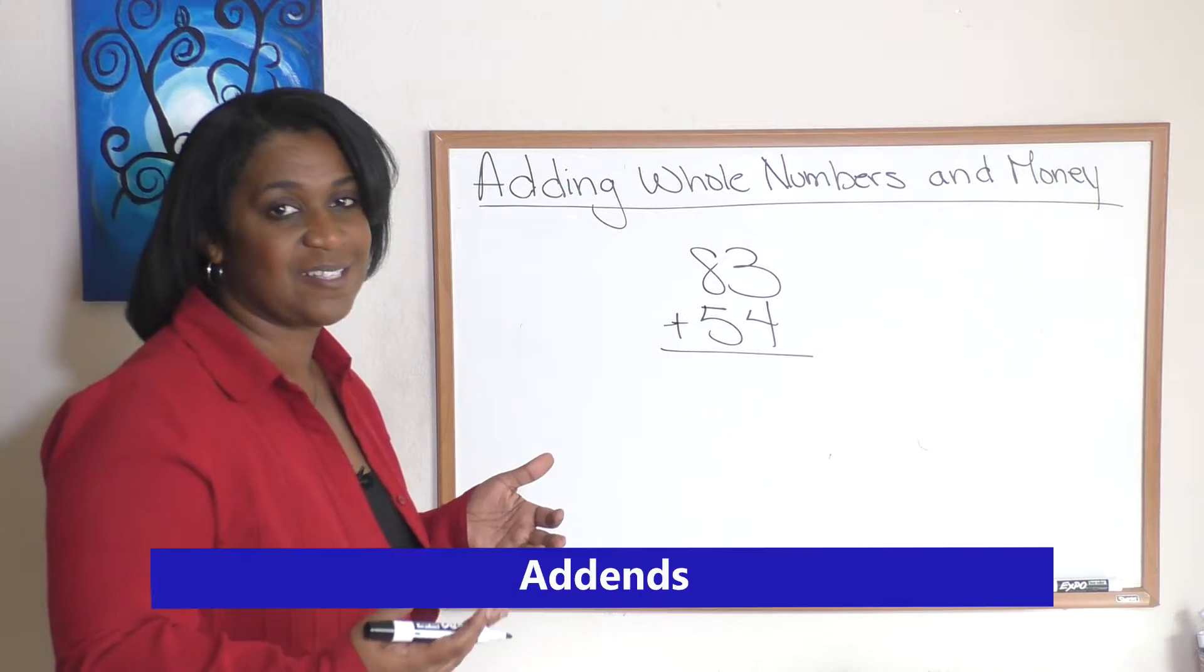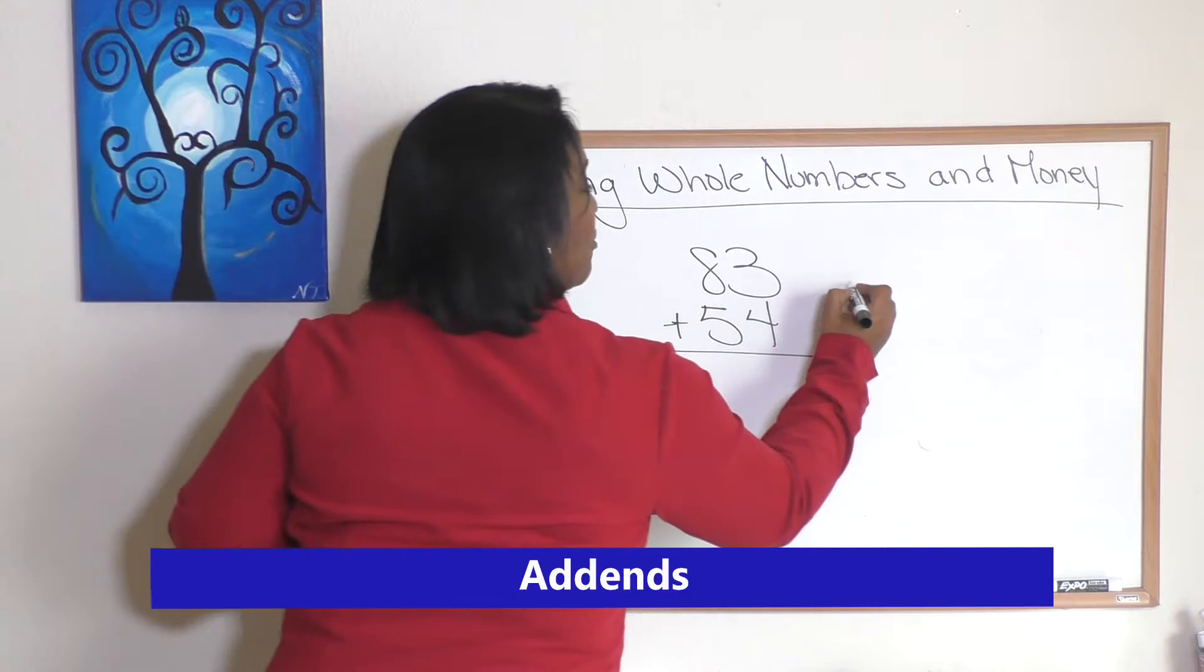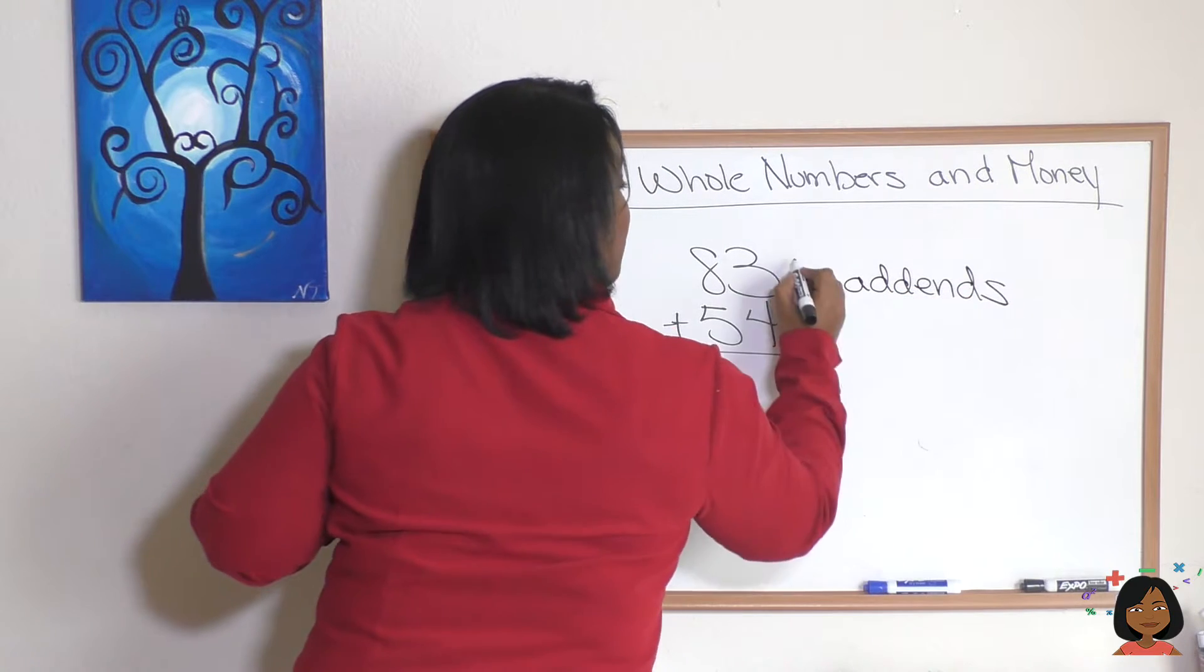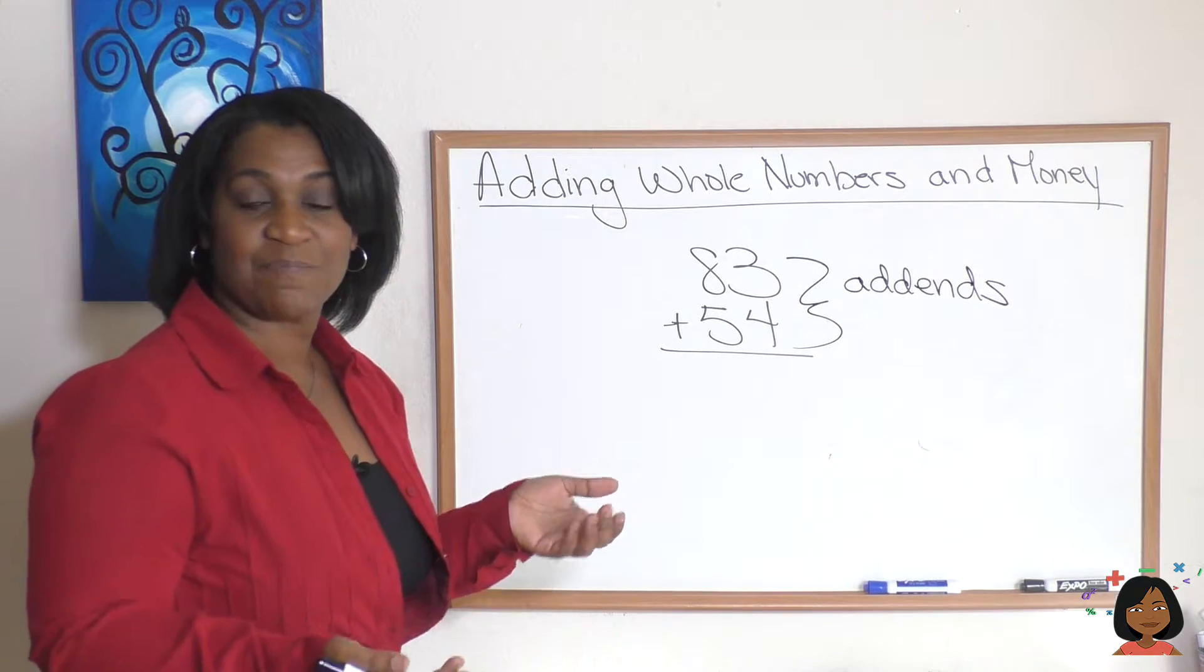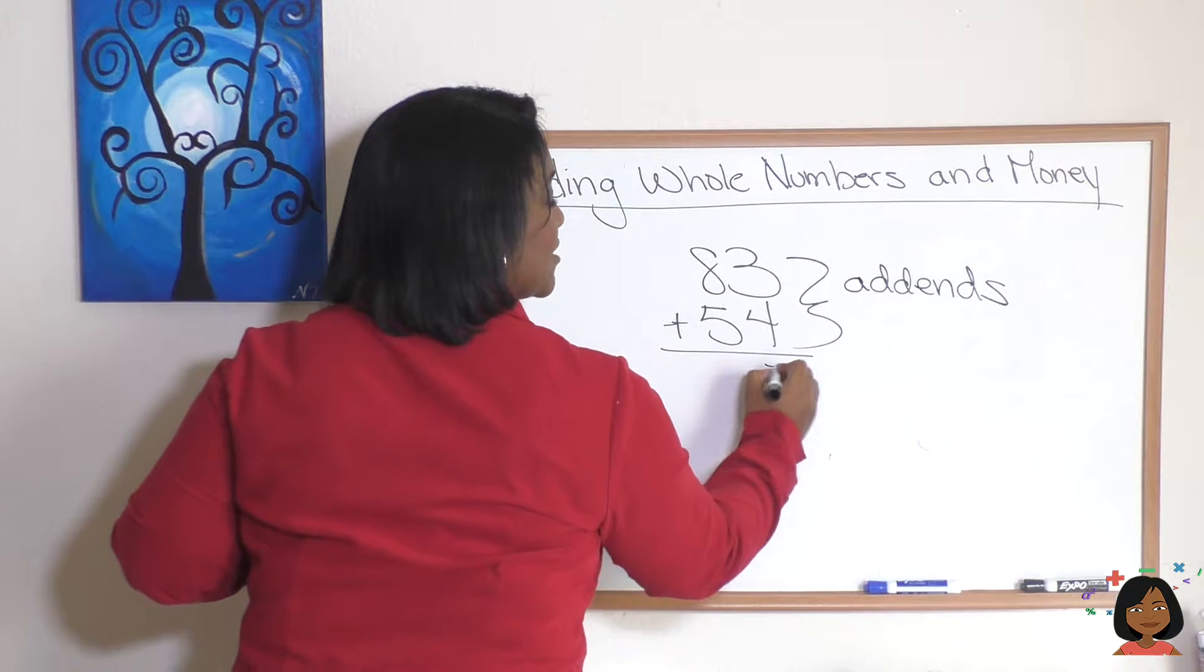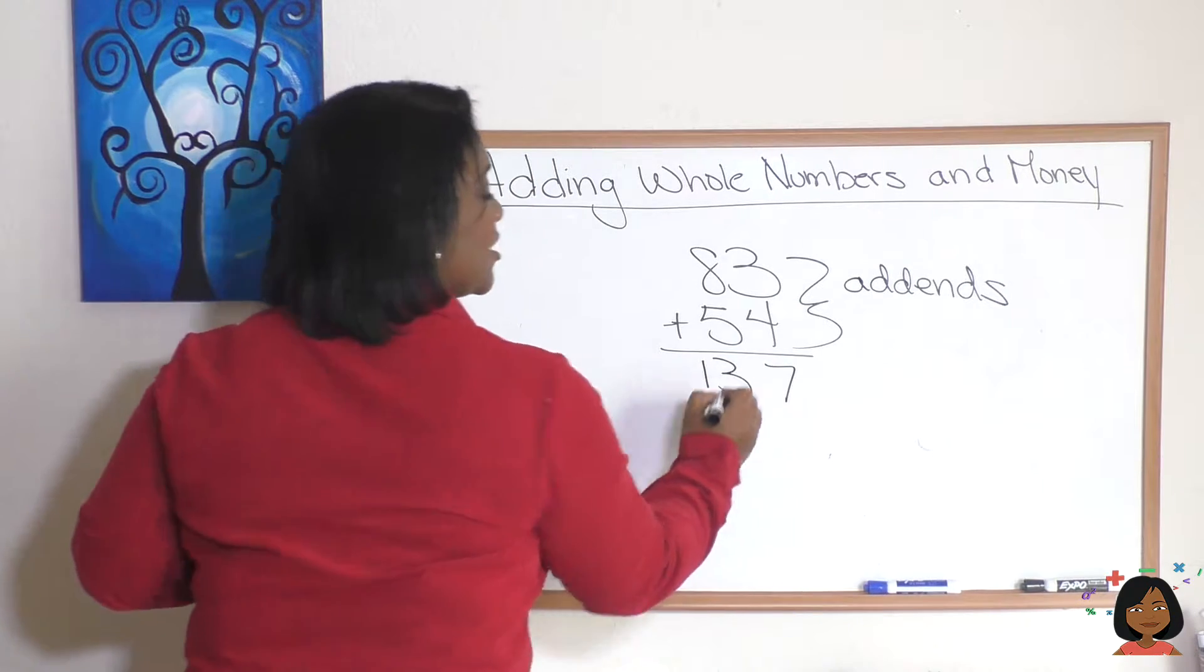These two numbers when we're adding them together are called addends. It's a pretty simple title: addends. So 83 and 54 are my addends when I add two numbers together. Let's go ahead and add them: 4 and 3 is 7, 8 and 5 is 13.